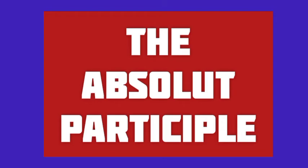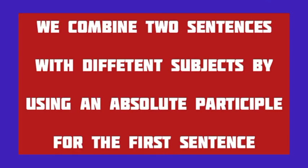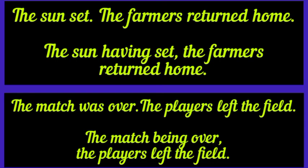Let's study the absolute participle. We have seen that we can join or contract a sentence using a participle. We combine two sentences with different subjects with the help of an absolute participle for the first sentence. So, if there are two sentences with their own different subjects, we can use the absolute participle for the first sentence to join them. For example: the sun set — here the subject is the sun. The farmers returned home — in the second sentence, the farmers is the subject. So the subjects are different.